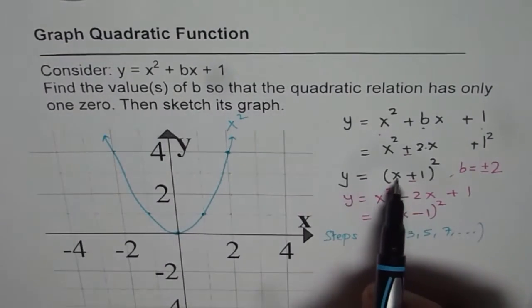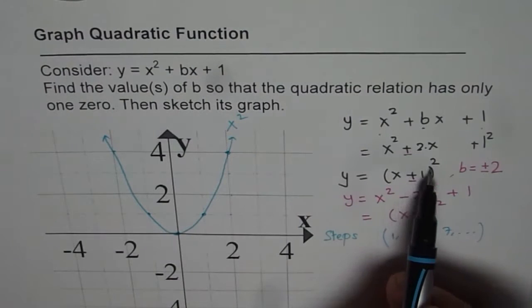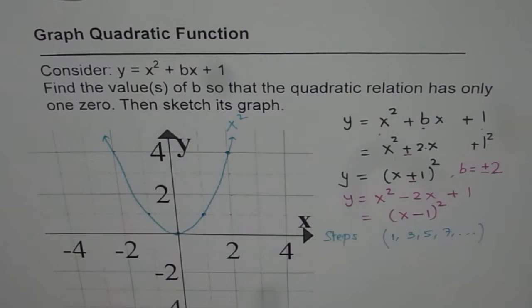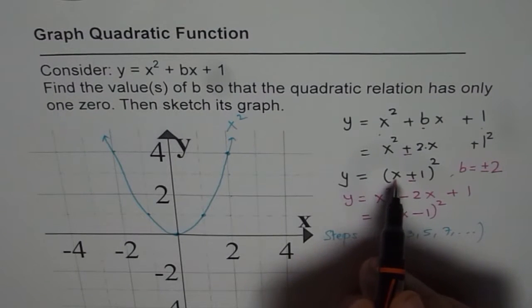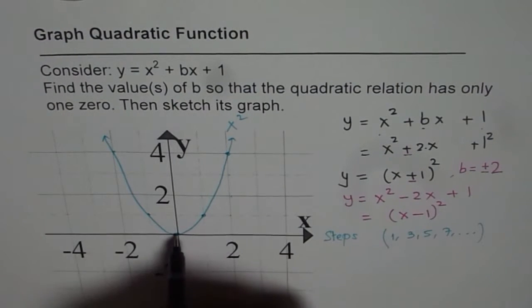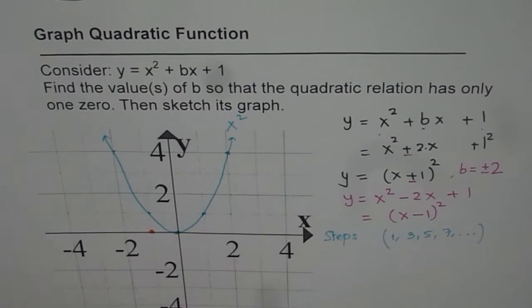Now we have x squared, x plus one whole squared. Now x plus one basically means that you are moving one unit. So we are doing x plus one. If I write x as minus one it becomes zero. So this point moves one unit left.